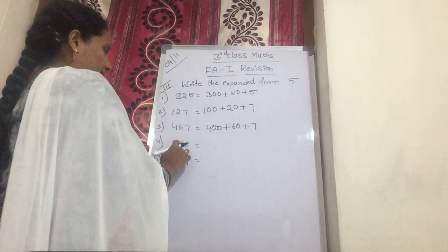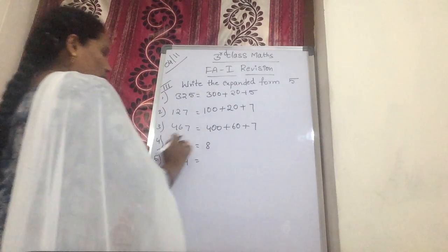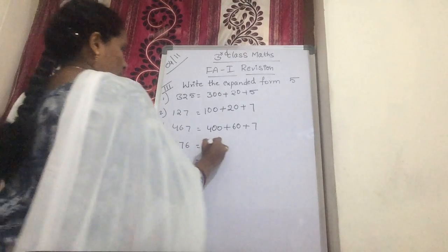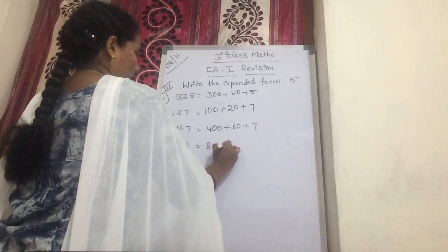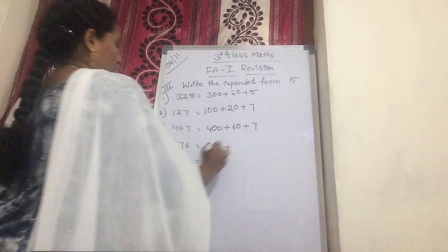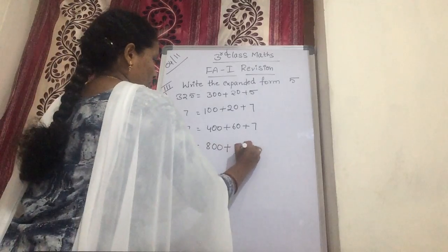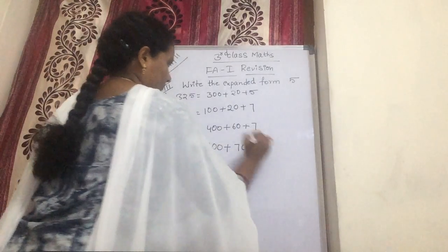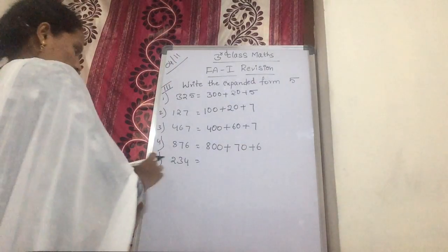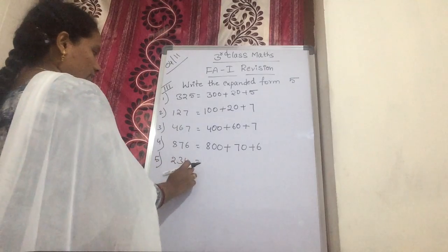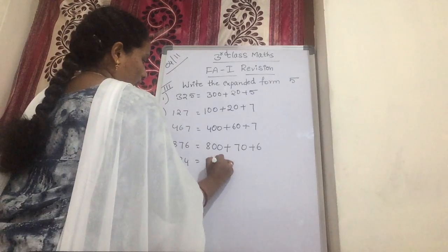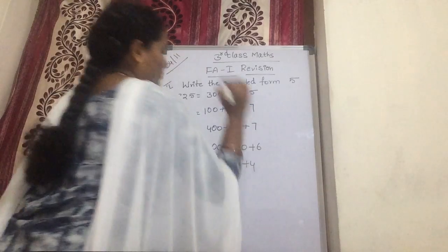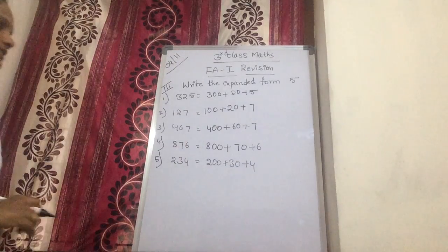Now 8176. 8 — after 8, two numbers are there, so you put 2 zeros. Plus 7, you put 10. Plus 6. Next, 234 equals 200 plus 30 plus 4.